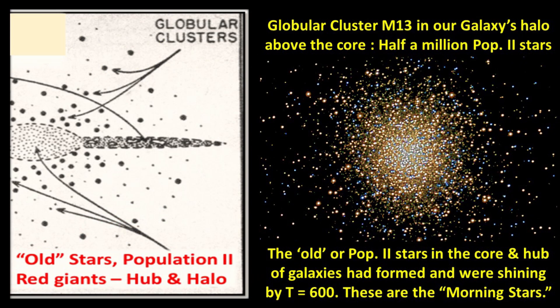After quasars, stars in the core of galaxies and in the halo, around the hub, then develop. The sketch shows the position of these objects in relation to our galaxy. On the right is a photograph of the globular cluster, M13, in the halo above the hub of our galaxy. These stars are some of the old, or population two stars, which Job 38 referred to as morning stars. These had formed by time code T equals 600 experimentally.